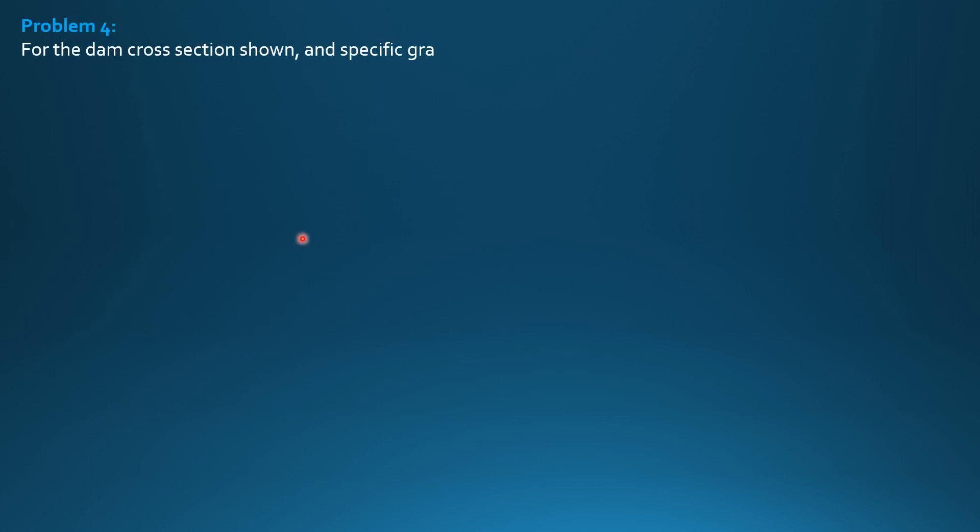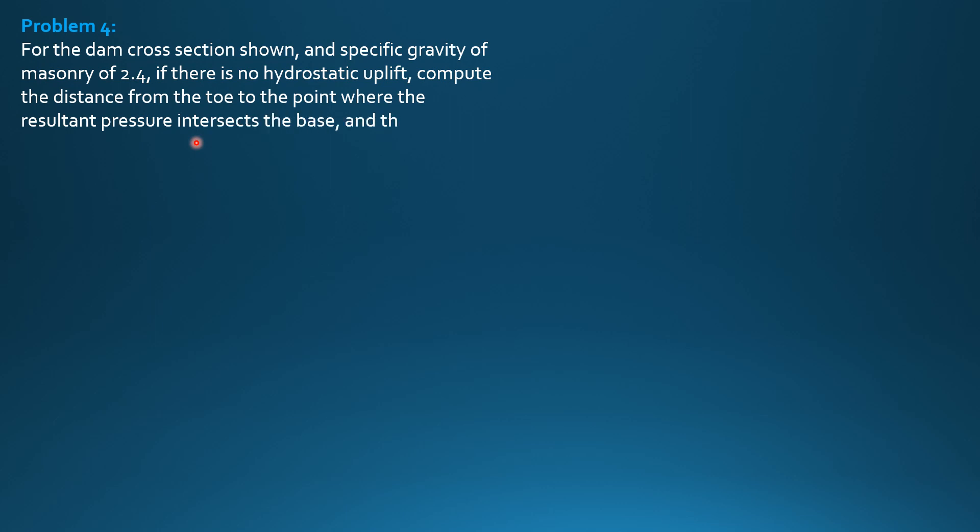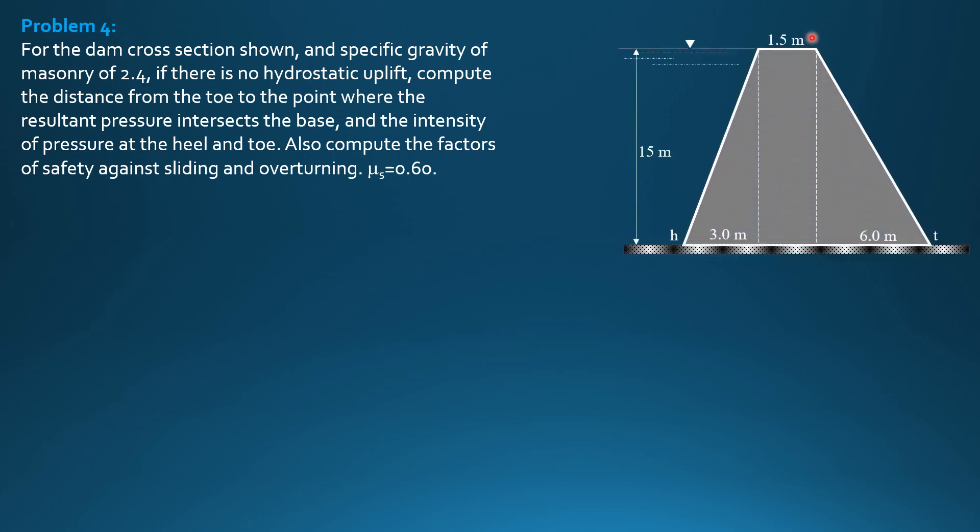Example 4. For the dam cross-section shown with specific gravity of masonry 2.4, if there is no hydrostatic uplift, compute the distance from the toe to the point where the resultant pressure intersects the base and the intensity of pressure at the heel and toe. Also compute the factors of safety against sliding and overturning. Coefficient of friction is 0.6 between the base of the dam and the foundation. So this is the figure.